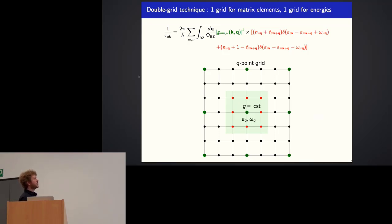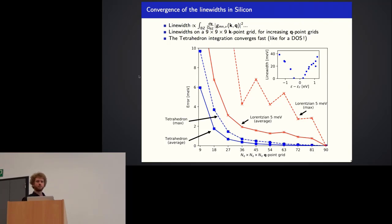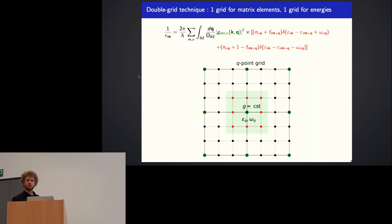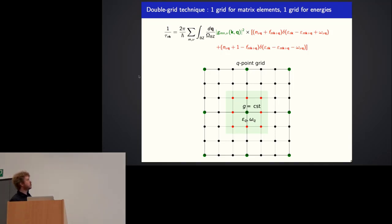This dense grid is required because of the rapidly varying delta functions in the Brillouin zone in the lifetime formula. Computing the matrix elements on a 50×50×50 Q point grid is the heavy task, while computing the energies — electron energies and phonon energies — is quite cheap. To address this, we implemented the double grid technique, where we use one grid for the matrix elements and a denser grid for the energies.